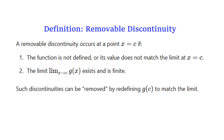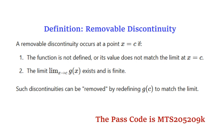To conclude: if a function has a point of discontinuity, that discontinuity can be removed if the function is not defined or its value does not match the limit at x equals c. In our example, g(x) at x equals 1 does not exist in the original form, but the function equals 2 when x equals 1 from the piecewise definition. This gives us a clear insight into removable discontinuity. Thank you for watching.